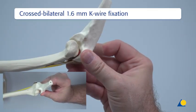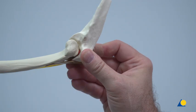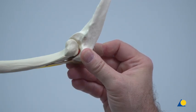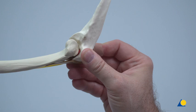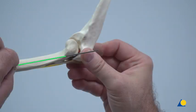The crossed bilateral technique, using 1.6 mm K-wires bilaterally from the radial and ulnar direction, will now be demonstrated. In the clinical situation, a small incision or a direct puncture with the K-wire is made over the planned entry points. The first K-wire insertion is planned with a centered alignment to the axis of the humerus shaft in the lateral view.